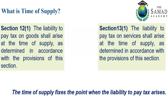Time of supply is simple — it fixes the point when the liability to pay the tax arises. Time of supply is the time when the supplier's tax liability arises. Section 12(1) states: the liability to pay the tax on goods shall arise at the time of supply as determined in accordance with the provisions of this section.